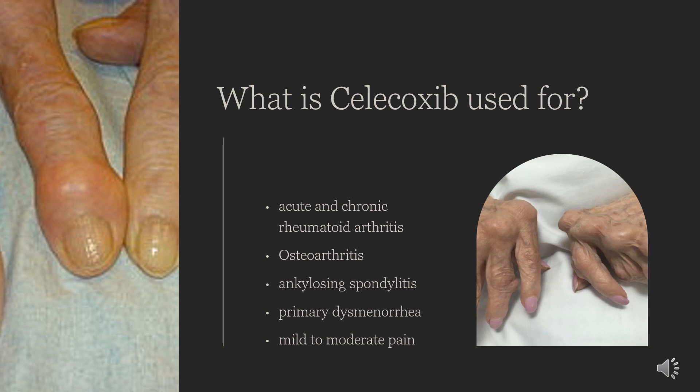Celecoxib, in combination with tramadol, is indicated for the management of acute pain in adults severe enough to require an opioid analgesic and in whom alternative treatments are inadequate.